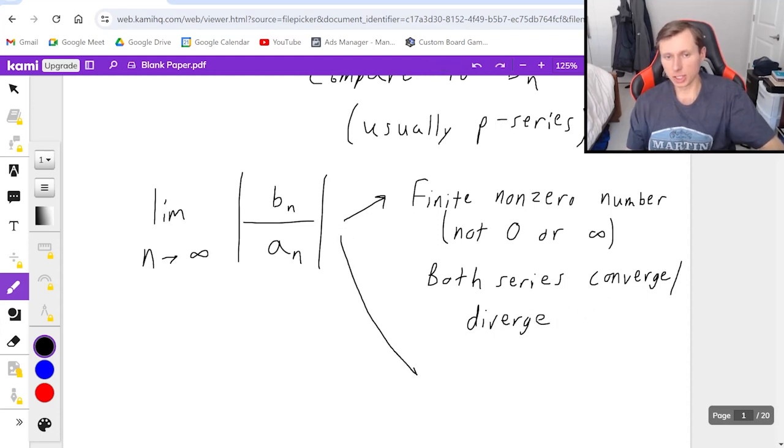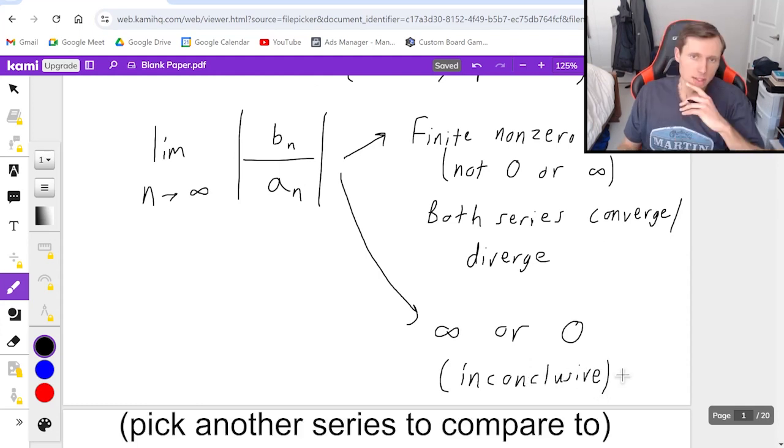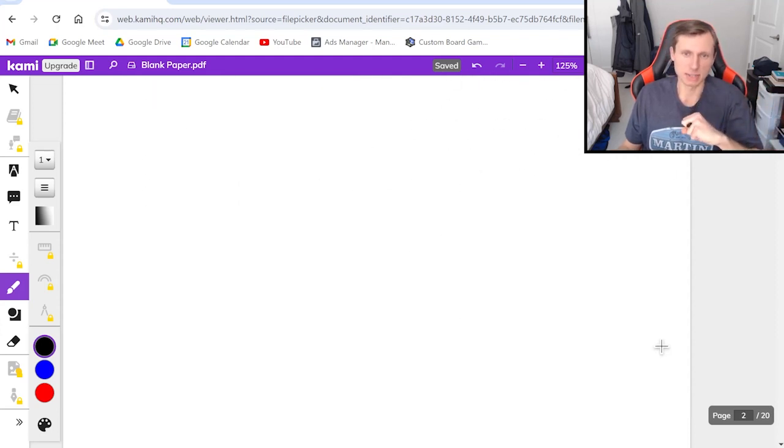And the second conclusion, if you do get infinity or zero, unfortunately, then it means the test was inconclusive, and you have to try again. So that's everything in terms of what you need to know to use the limit comparison test. Now let's look at some examples.